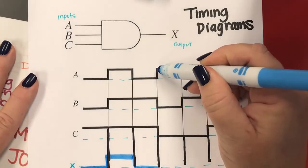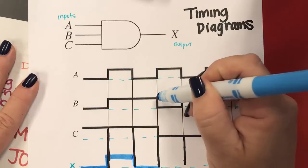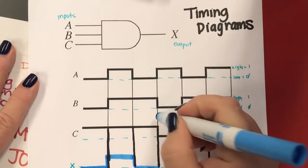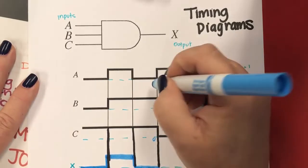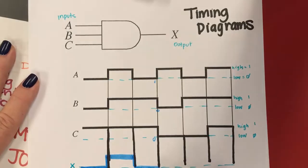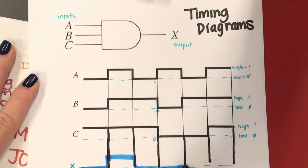So here A goes back to one, but B is zero right here, and C is zero. And A is one. So it's going to stay zero. Now it's zero for a different reason, but it's still zero.